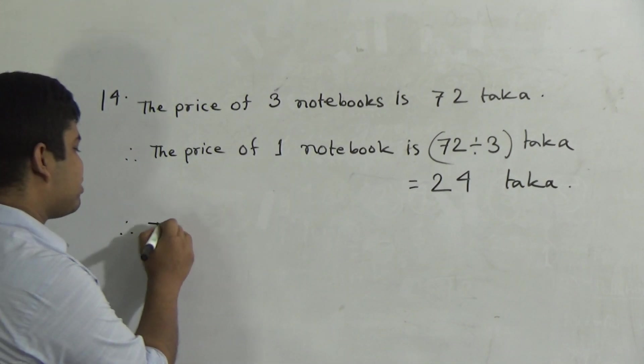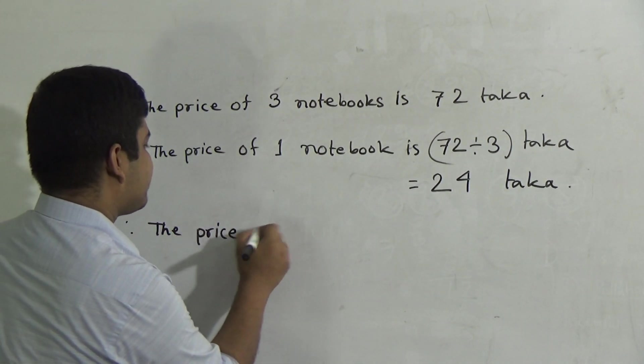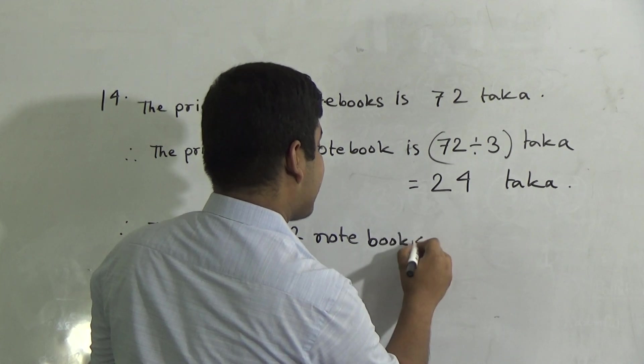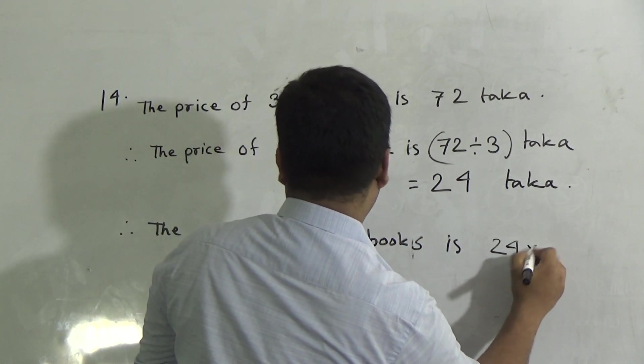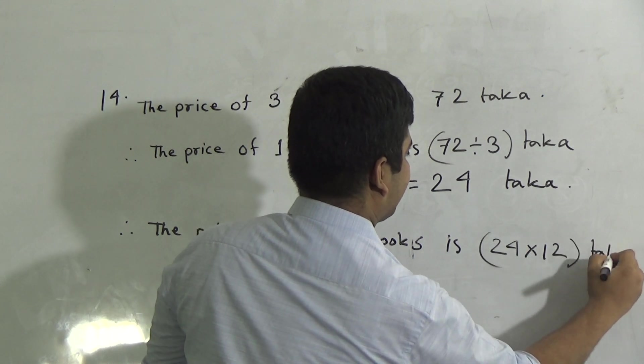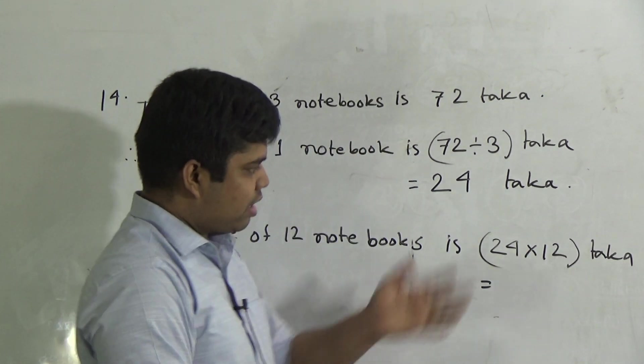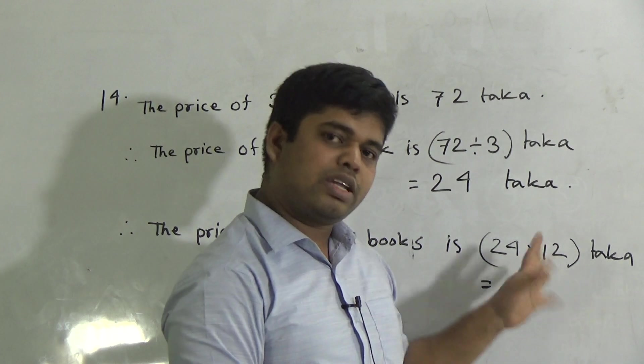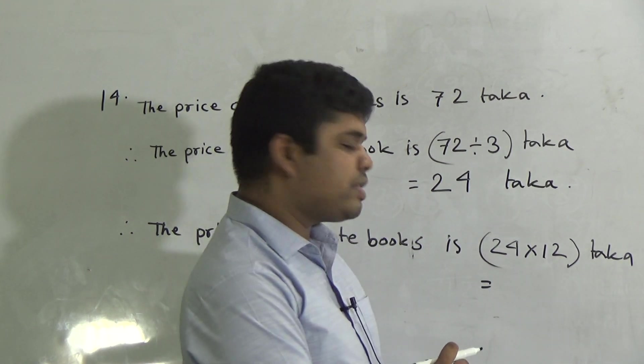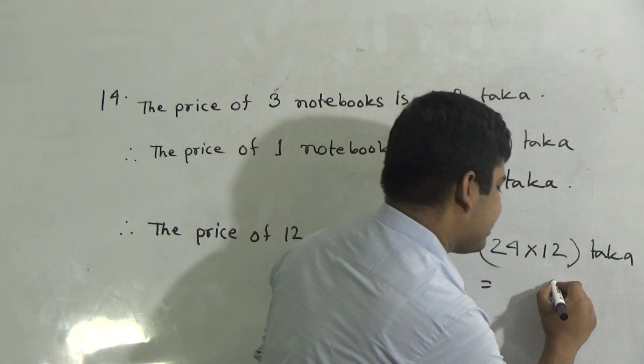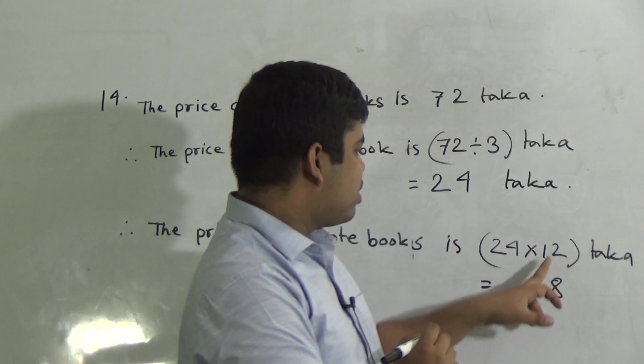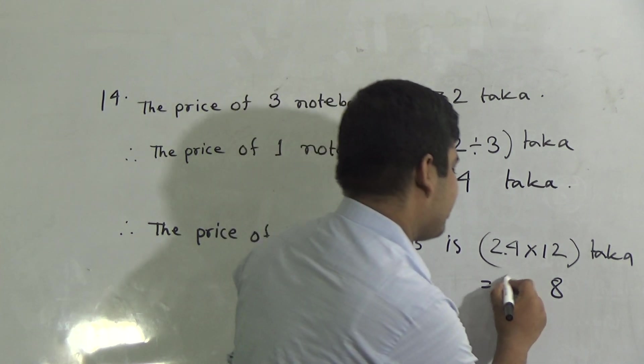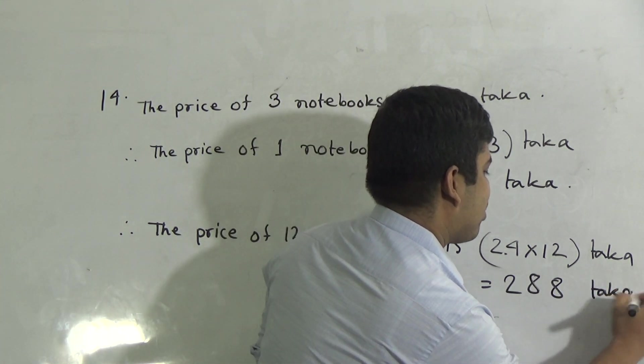So write the price of 12 notebooks. The price of 12 notebooks is 24 multiplied by 12 taka. So if you can multiply 24 by 12, then you can. So 4 twelves are 48. From 48 I write 8 carrying 4. 12 twos are 24. 24 plus 4 is 28. So we write here 288.